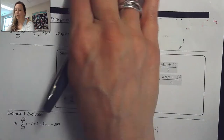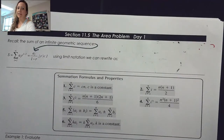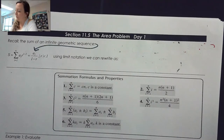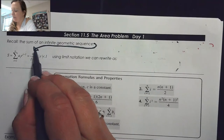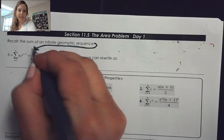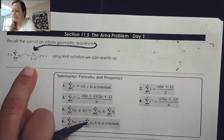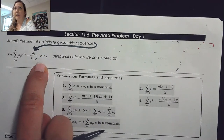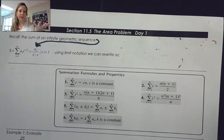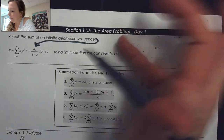Today we're looking at 11.5 day one: the area problem. We learned back in algebra 2 that when we have the sum of an infinite geometric sequence, as long as the absolute value of R is less than 1, we can use the geometric series formula.